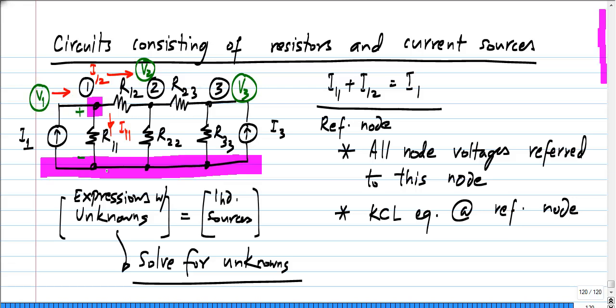When I say V1, it is with respect to this one. It is the voltage between this node and this reference node. Sometimes the reference node is also referred to as the ground node.